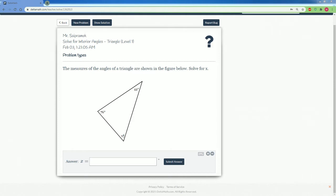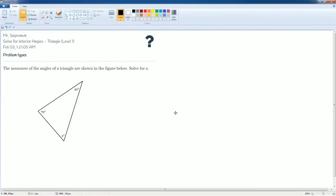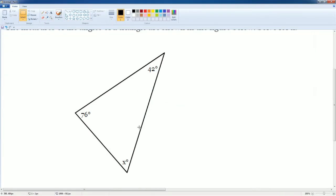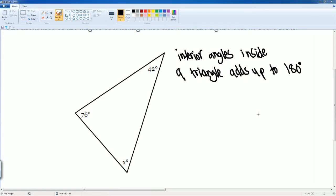Notice that all the angles are inside of the triangle - we're looking for the interior angles. We know that the interior angles within a triangle all add up to 180 degrees, and using that property we can set up the equation.